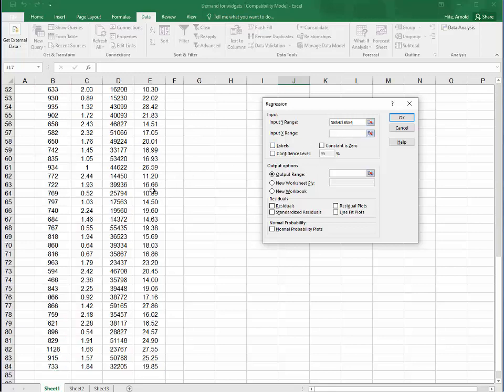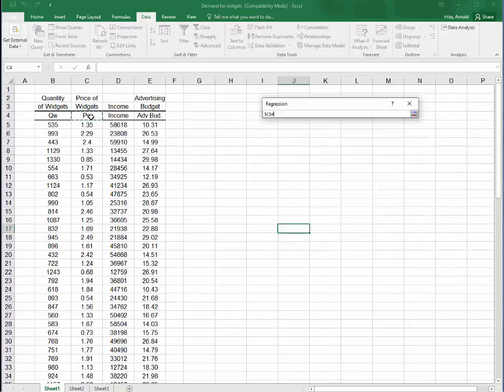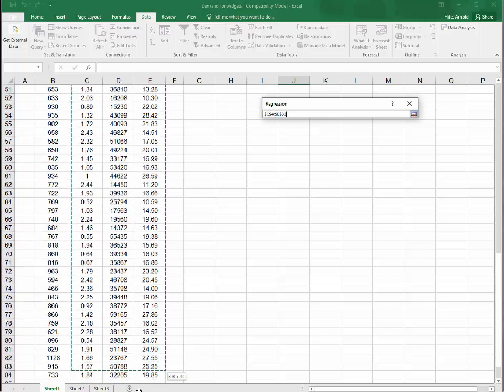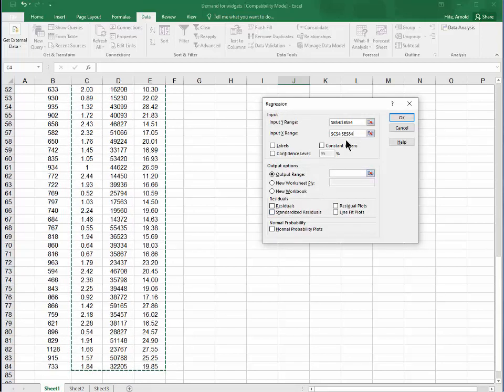I'm going to click down here. I'm going to do the same thing for the independent variables. I'm going to grab this one cell that identifies each of the three columns and all the data. So that's my independent variables.